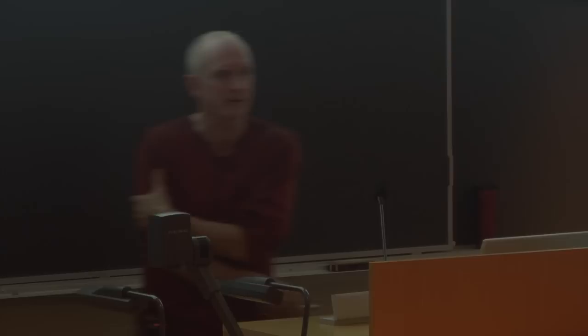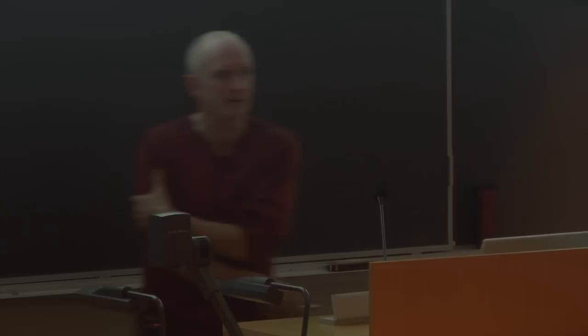So we can do what we call assigning a spectrum. This is actually an NMR spectrum of the ETS protein. Each of these dots is a proton that's connected to a nitrogen. Every amino acid has one proton connected to one nitrogen, except prolines. So each of these corresponds to one amino acid that's making up this protein. We can see it's nicely spread out. There's names, if you could read them, because we know who they are. Since we know who they are, we can ask questions about their structures.